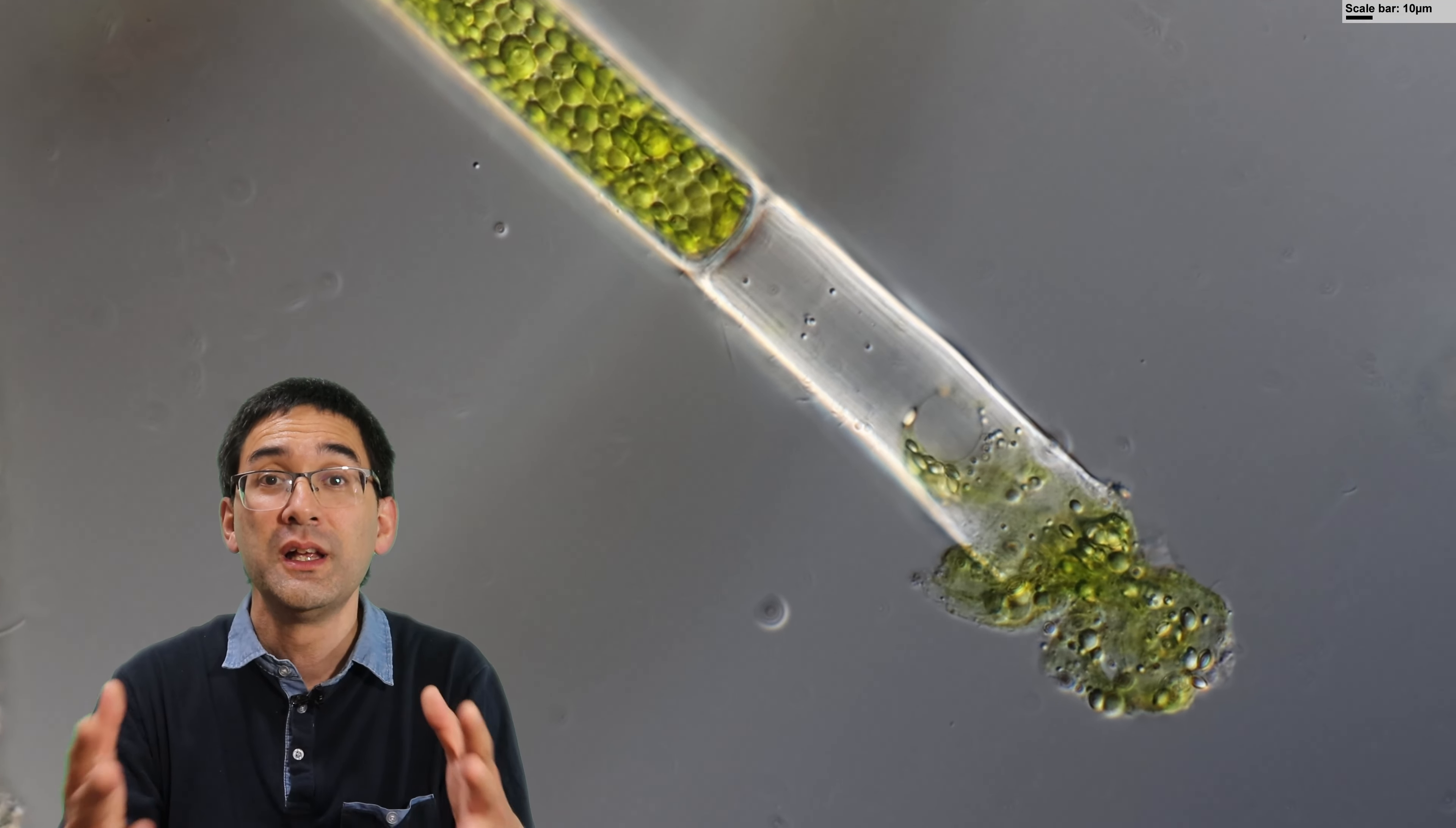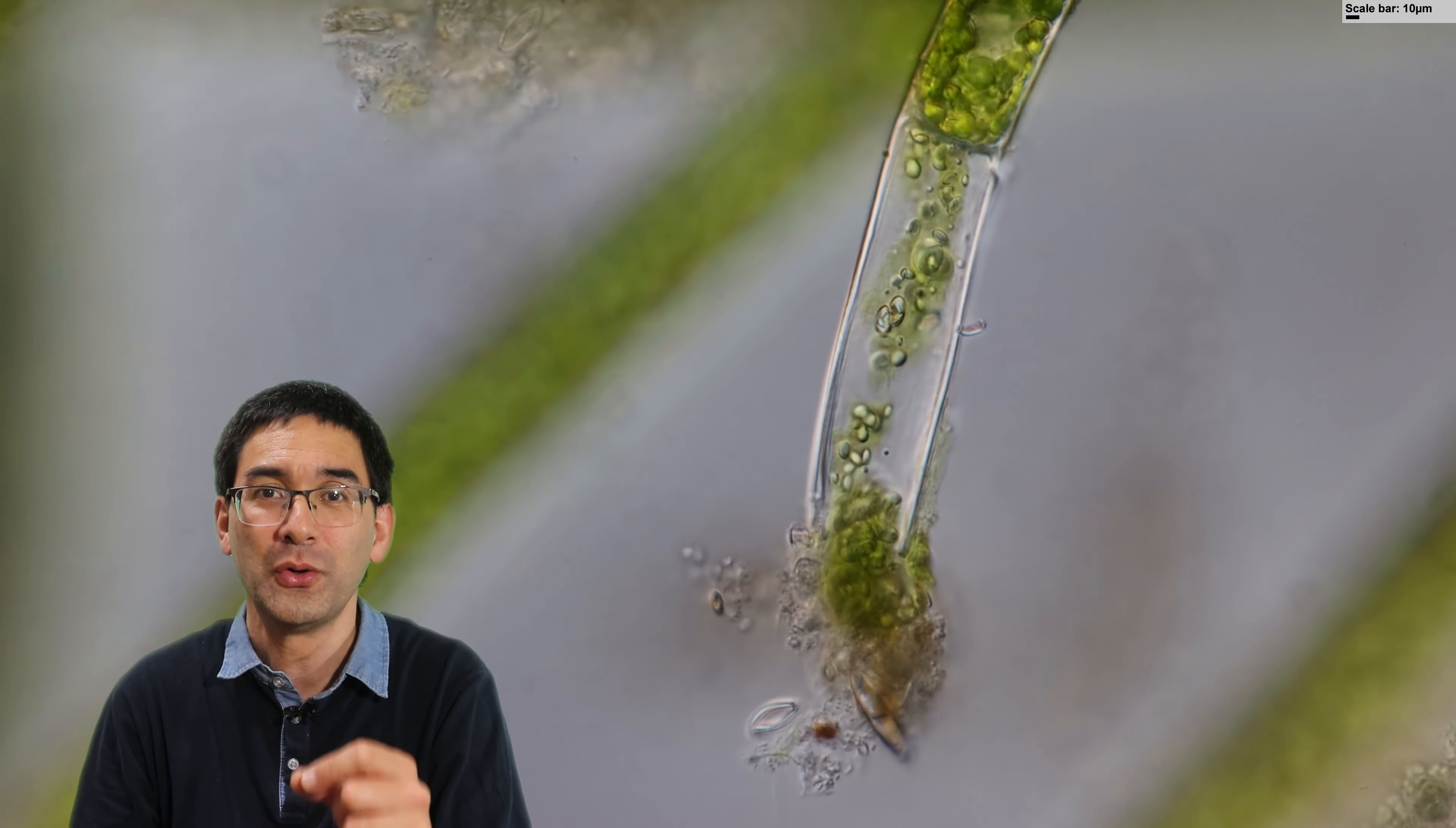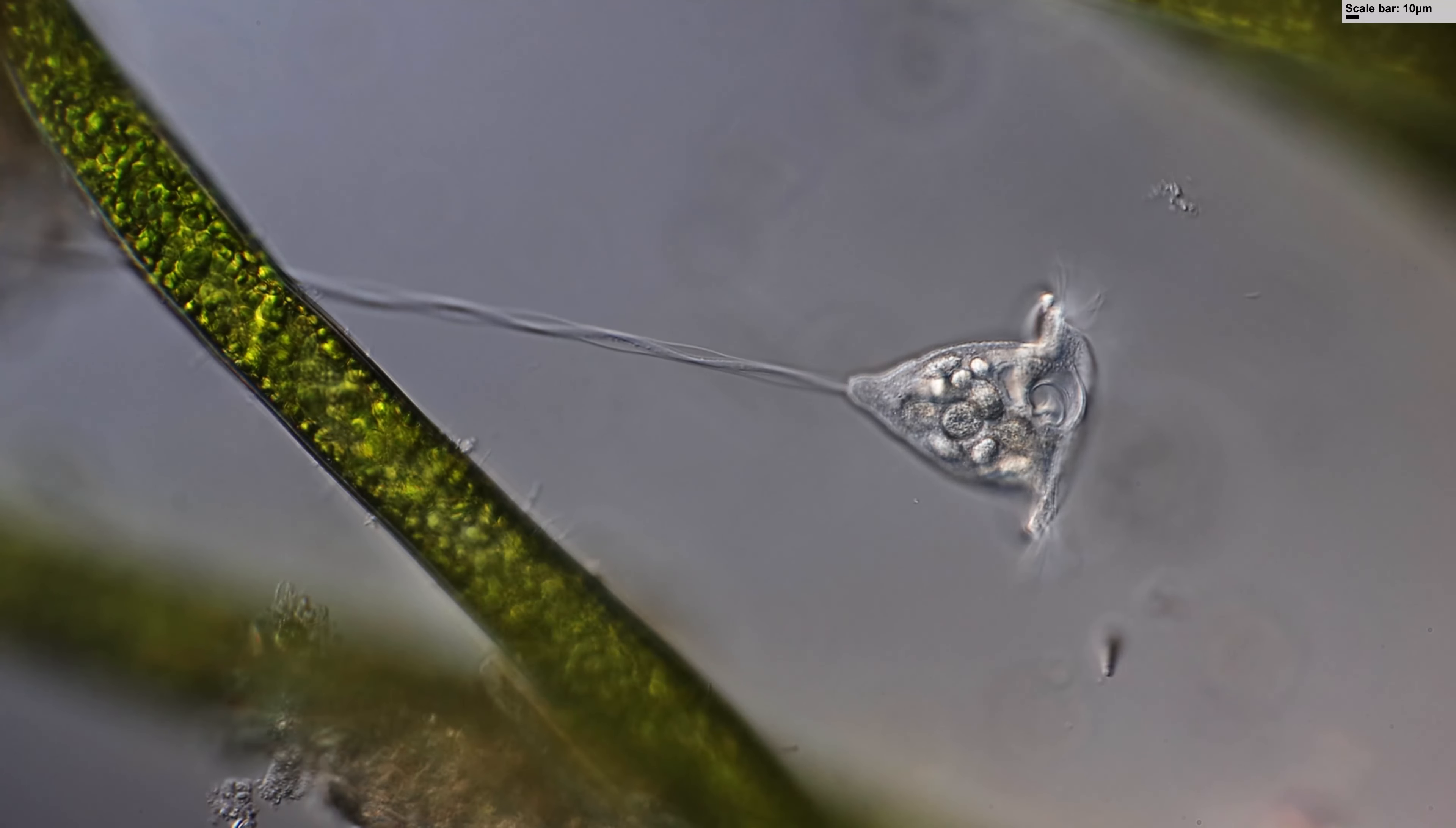Some of the cells that you see over here seem to be cut open, and the cell contents are spilling out. The reason is when I took out those filaments from my jar, I had to cut them off using a scissor, and this caused some of the cells to break open and spill the contents out.